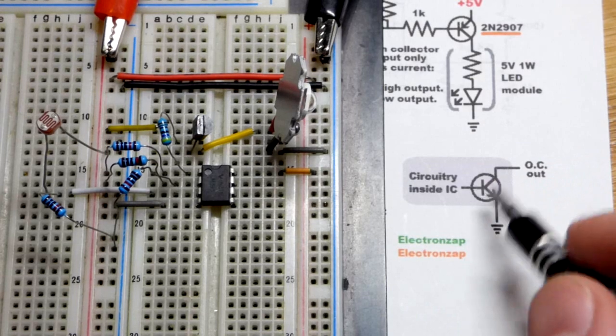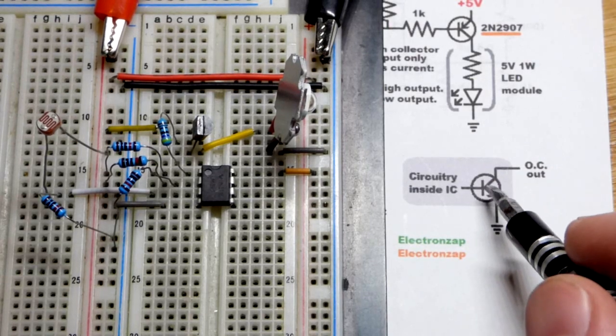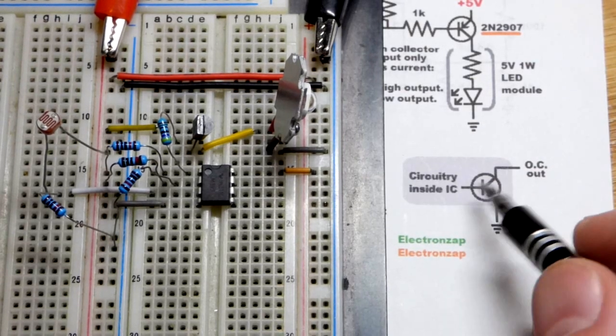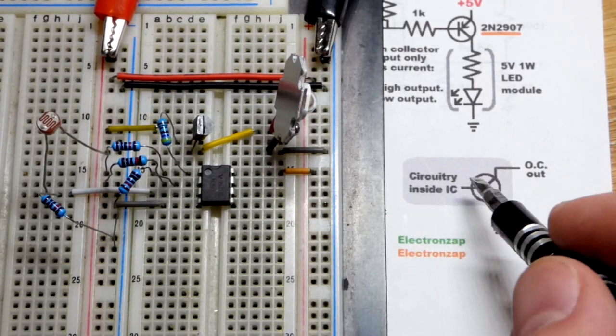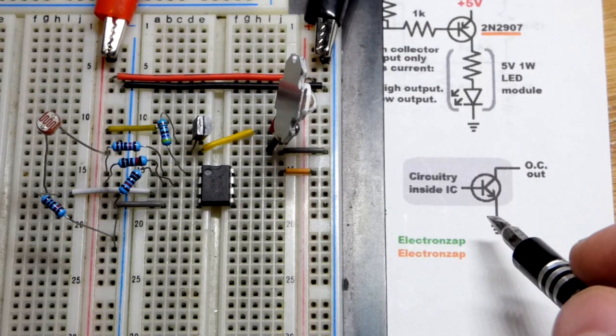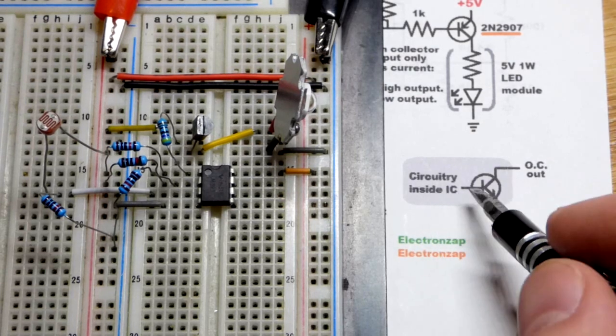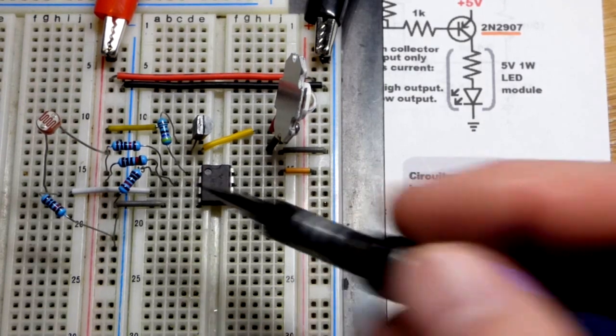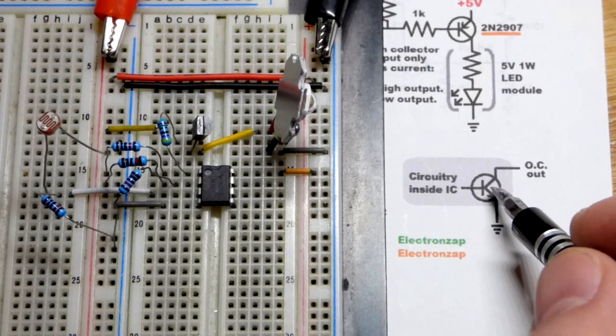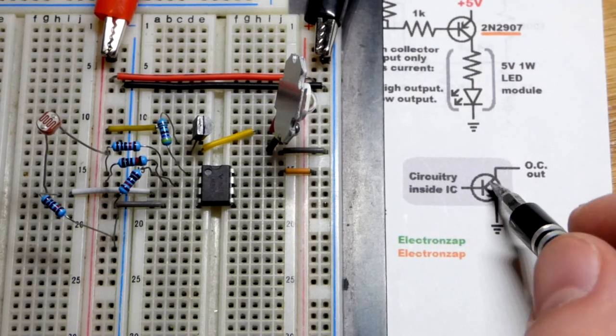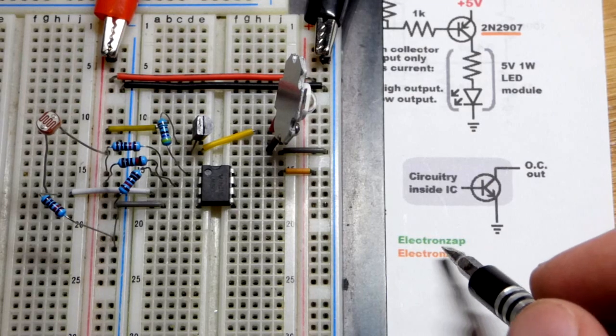We have the NPN bipolar junction transistor. It's built into the integrated circuit. There's other circuitry that determines whether it's on, a small base-to-emitter current turning it on, or off. So it's just a comparator that the output basically comes to a transistor, and the transistor either turns on or off.